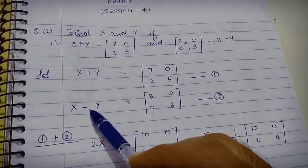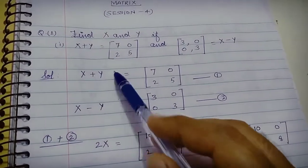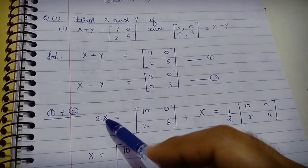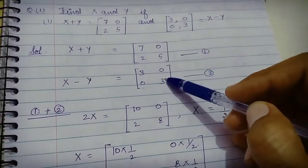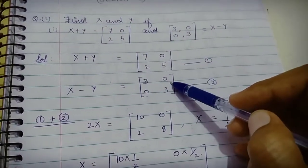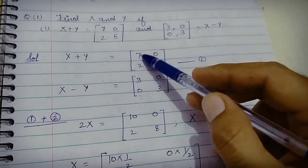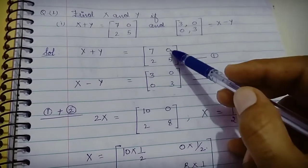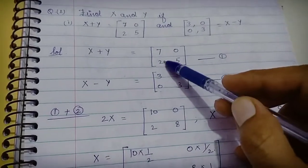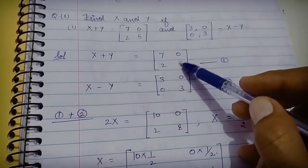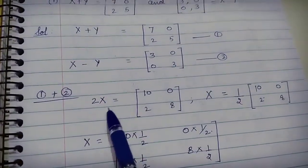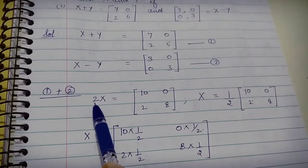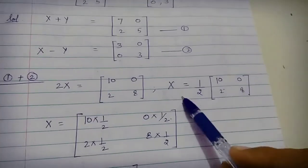When we add the two equations, Y and Y cancel out, and X plus X equals 2 times X. The addition of two matrices is defined as the addition of corresponding elements, so 7 plus 3 equals 10, 0 plus 0 equals 0, 2 plus 0 equals 2, and 5 plus 3 equals 8, giving us 2X equals the matrix [10, 0, 2, 8].